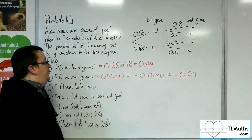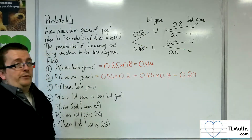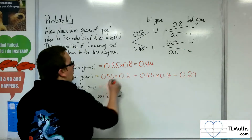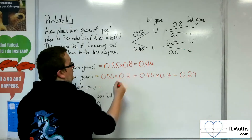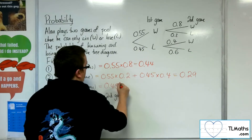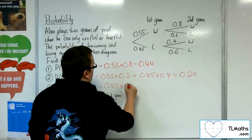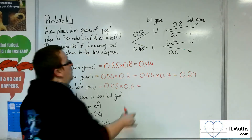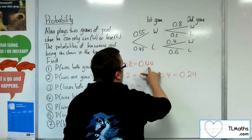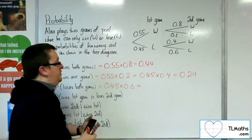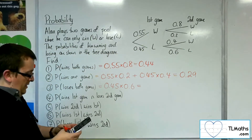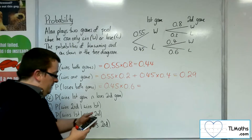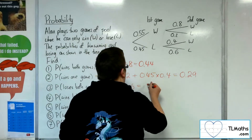Now, what's the probability that he loses both games? You could do this in one of two ways. You can either multiply through lose-lose, so 0.45 times 0.6, or you could do one take away 0.44 and take away the 0.29 as well, because you've exhausted all the other options there. And you get 0.27.